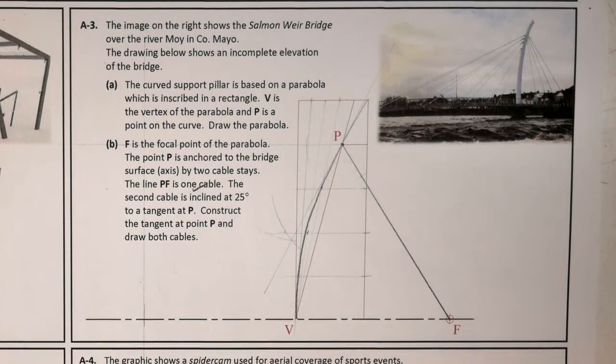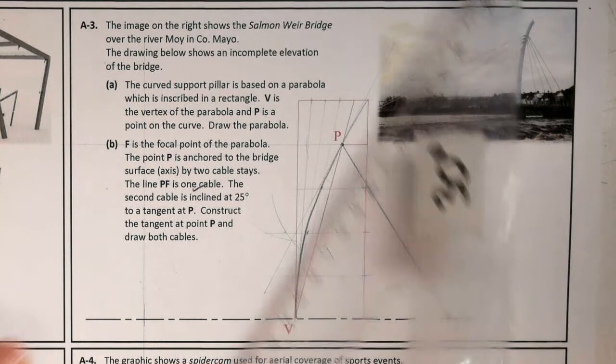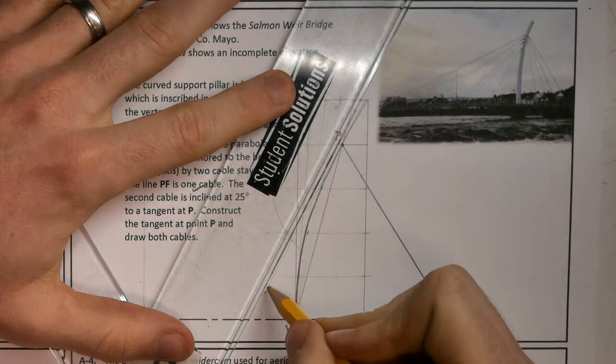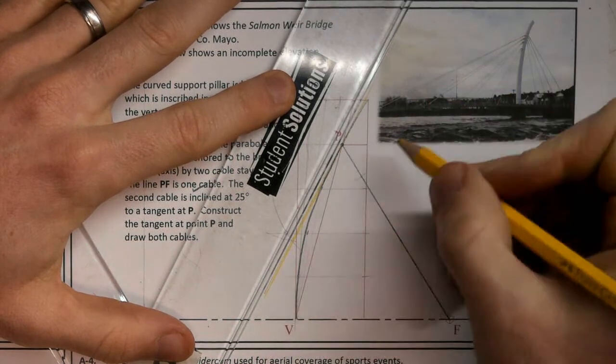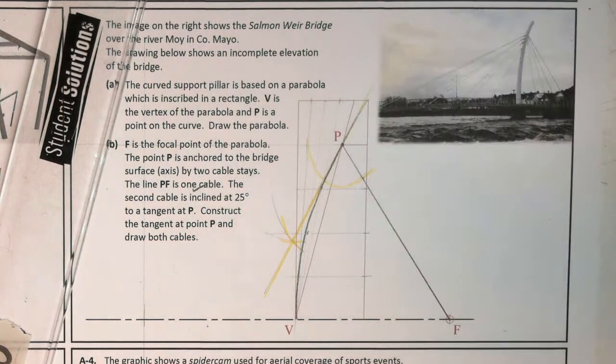It's just a method that I encourage people to use because it works for a tangent to all conics. Anyway, we have located our tangent using that bisecting construction.